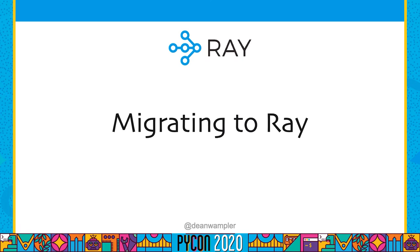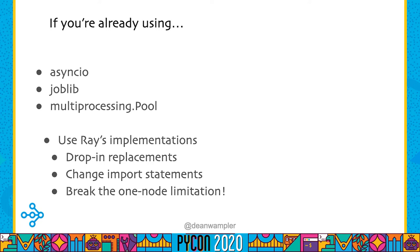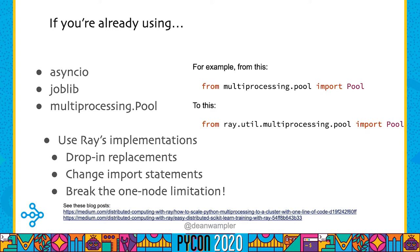If you want to adopt Ray but already use other APIs, we've done implementations of the APIs for AsyncIO, JobLib, and Multiprocessing.Pool so that in most cases you can just drop in Ray by changing an import statement. This not only gives you the same local node computation, but now you can scale your apps to a cluster with just this substitution. There are blog posts on ray.io with more details.